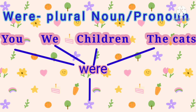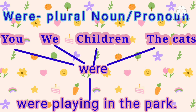Cats is a noun. You can see that all these nouns and pronouns are in their plural form, so in this case we will use were.